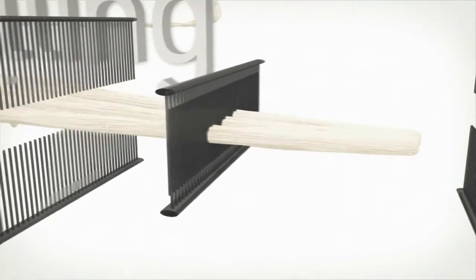The worsted sliver moves on to the gilling process, which is designed to further align the fibers.